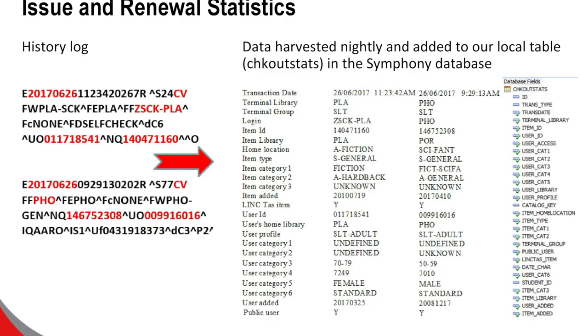I also discovered that the delivered statistical reports were really inflexible and didn't provide enough detail for such a diverse network as TALIS. The main reason was that when you ran their delivered reports, they were actually gathering the information from log files at that point in time. So we made the decision to harvest the data ourselves, effectively creating our own little dataset of issue and renewal transactions.